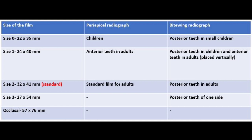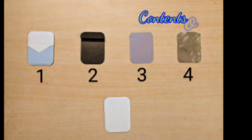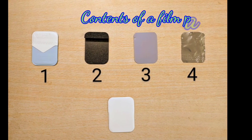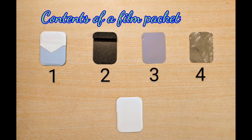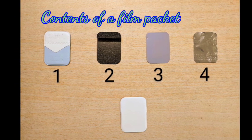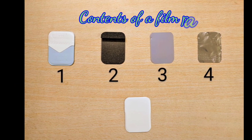The occlusal radiograph film measures 57x76mm and is used for making occlusal radiographs of the mandible or maxilla. Moving on to our main topic — the components or contents of an x-ray film packet.